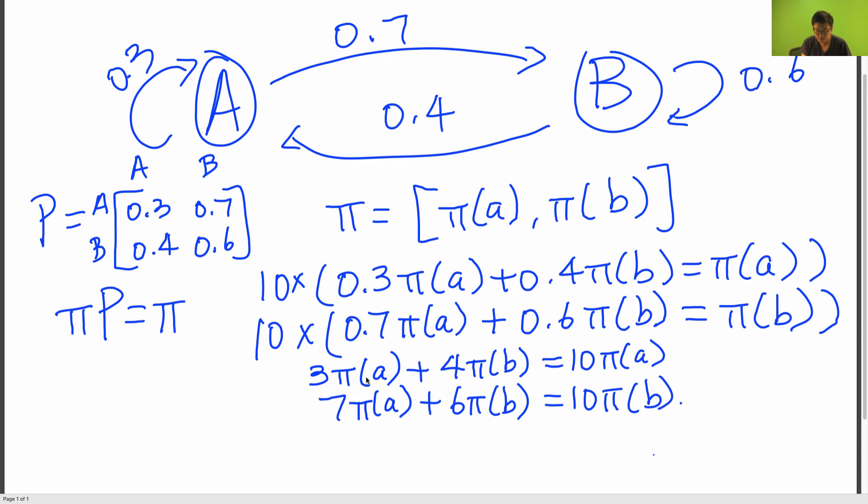So I'm going to move this pi A to the other side. So this equation, I'm going to move the 3 pi A over to the other side to get 4 pi B is equal to 7 pi A.